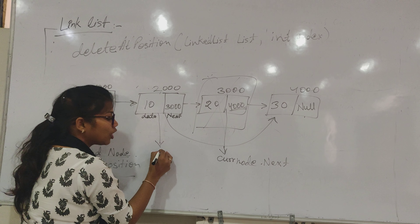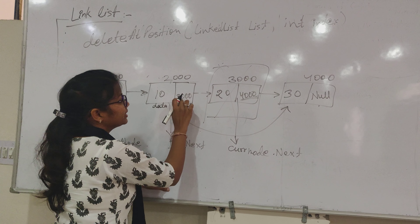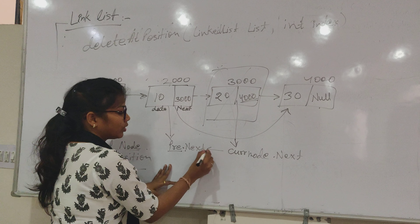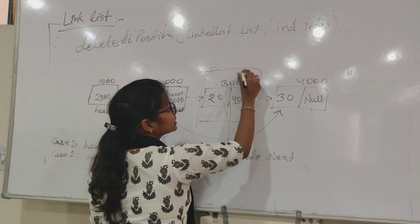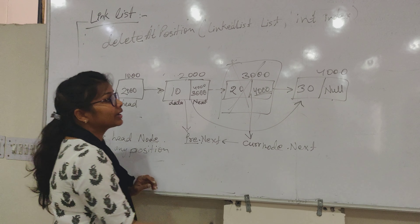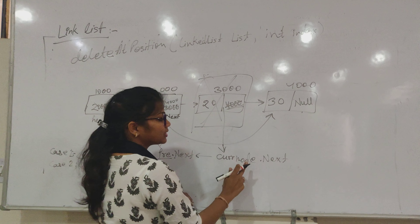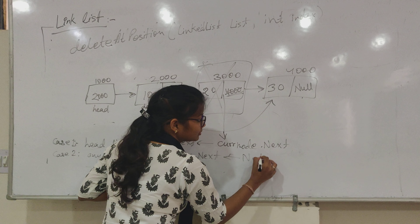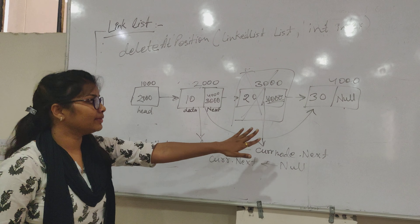And if the current node is found, then I have to delete it. I have to update the previous node. In previous node's next, I have to store the next node's address. So the connectivity is established here. This is the deletion at any position.